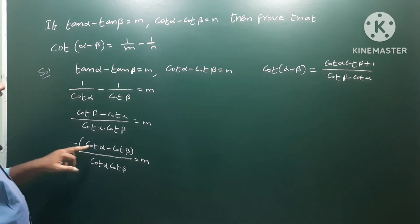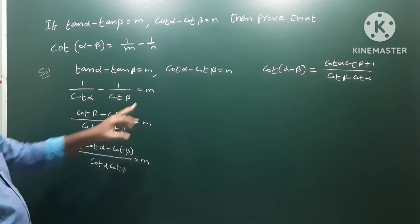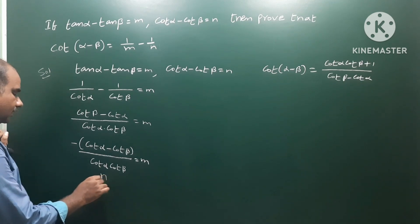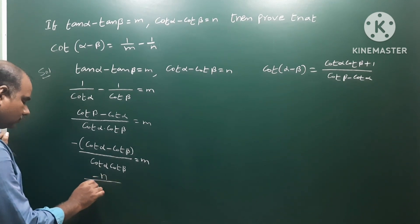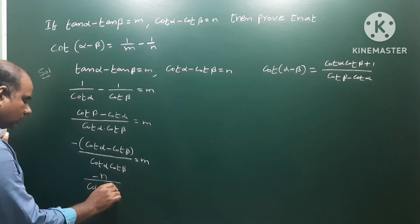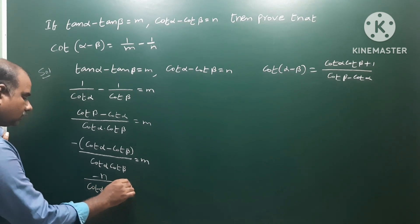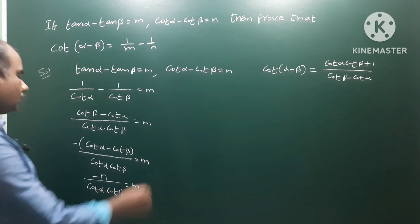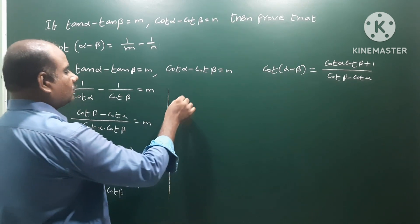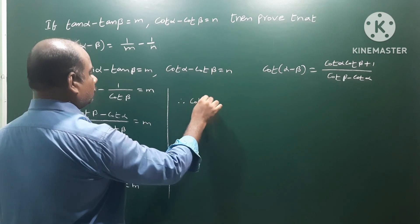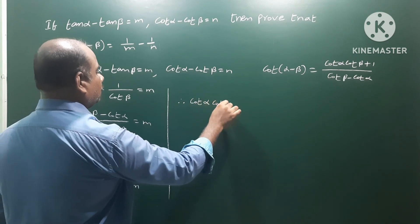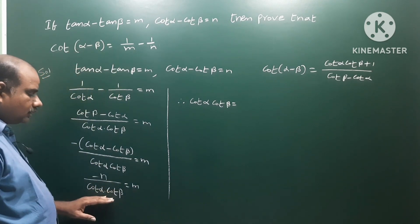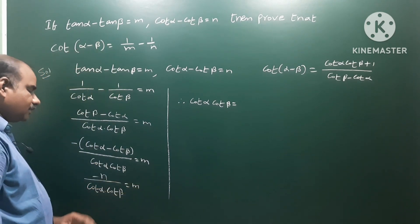So cot alpha minus cot beta on the value is minus n. Therefore, minus n by cot alpha cot beta is equal to m. So cot alpha cot beta equals minus n by m.